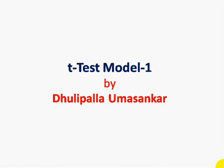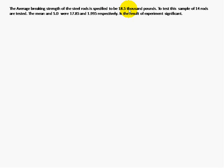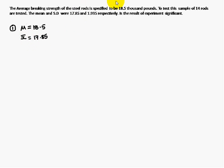Today we are going to discuss a t-test problem. The average breaking strength of steel rods is specified to be 18.5 thousand pounds — average means mean, so mu is 18.5. A sample of 14 rods is tested, so n equals 14. The sample mean x-bar is 17.85 and the standard deviation s is 1.955.